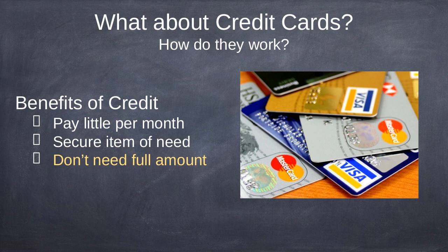There are some benefits of credit cards: you can pay a little per month, it's a security item of need — meaning you get the item today and don't need the full amount. Say you go to Lowe's or Home Depot and need a new refrigerator. You don't have the $2,000 to buy it, but you have a credit card with $2,000 available. You put it on your credit card and pay it off eventually. The credit card company wants you to pay as little as possible per month because the longer it takes you to pay, the more money they make.